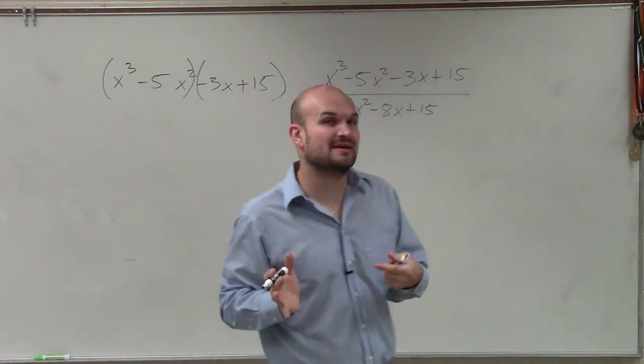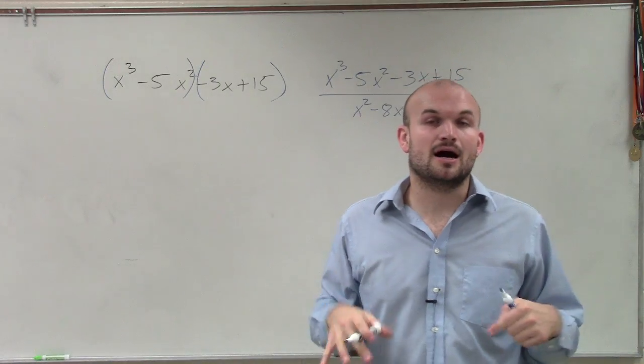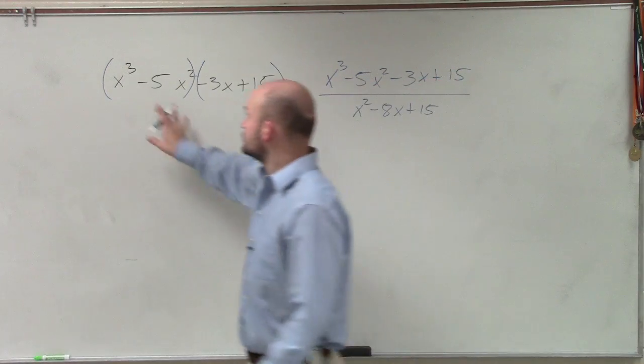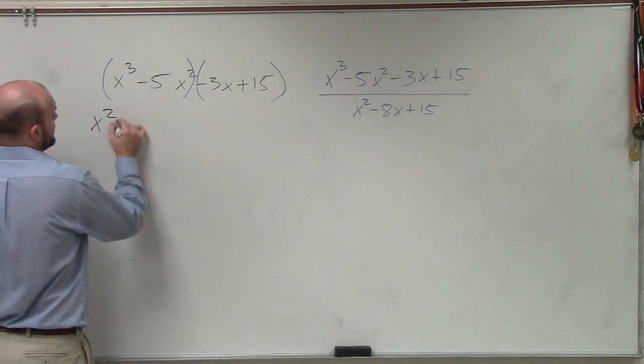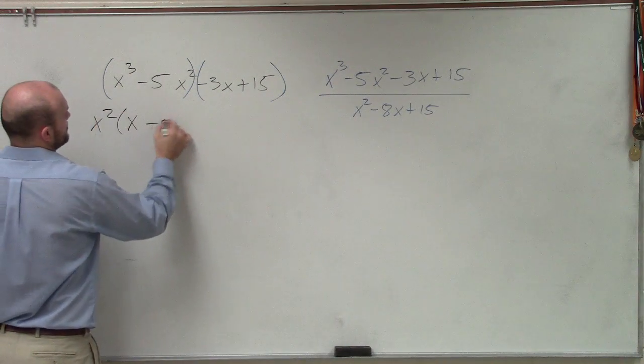Then what we're going to want to do is factor out each one of these terms by their greatest common factor. So if I look at x cubed minus 5x squared, I can see I can factor out an x squared. By doing that, I'm left with an x minus 5.